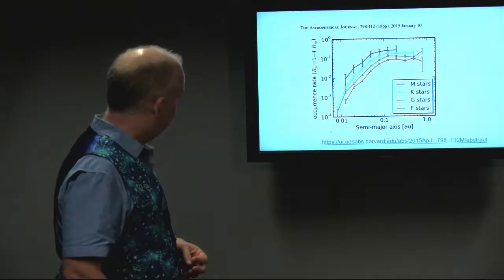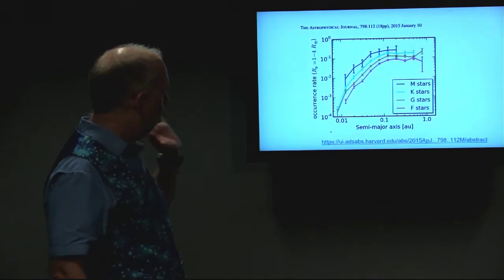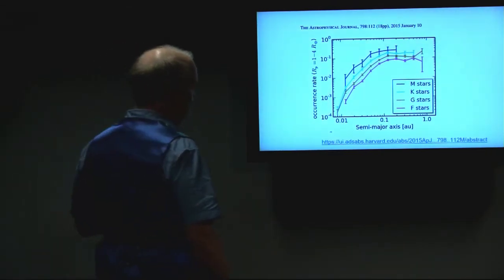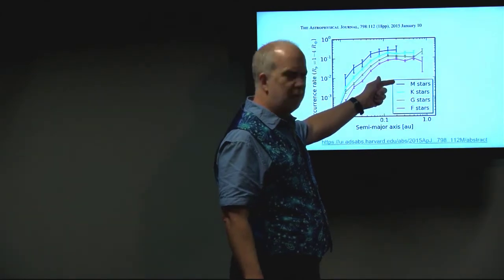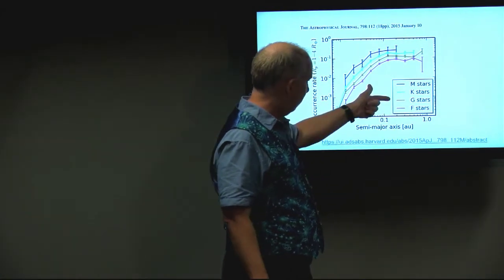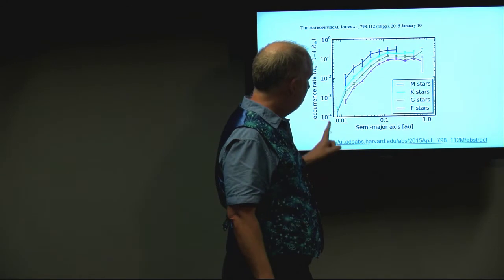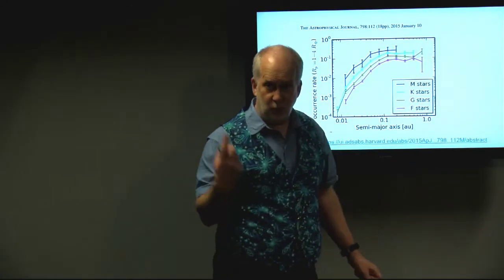Now if you remember this graph, this is showing how common planets are around different types of stars ranging from very hot, bright stars to very low mass red dwarf stars, sun-like G-type stars in the middle, versus how far out they orbit around the star.